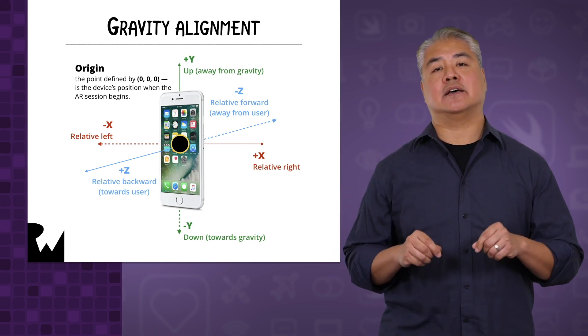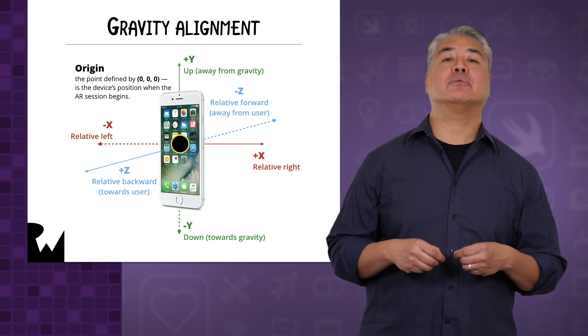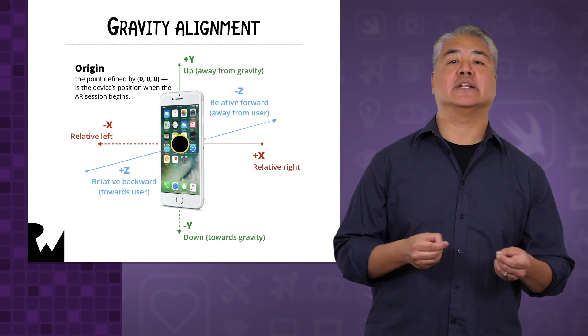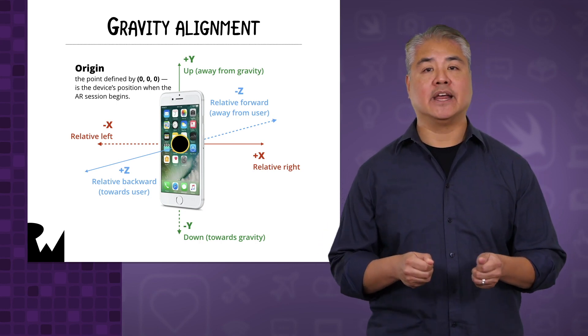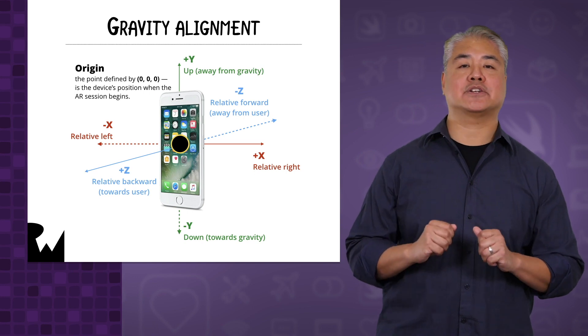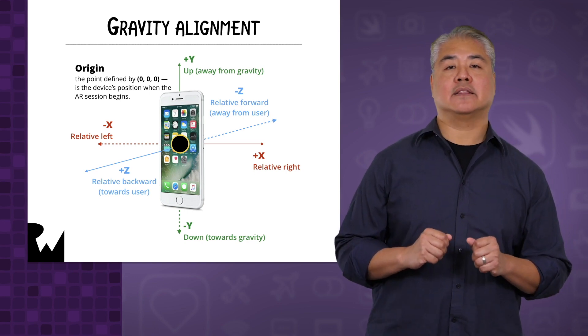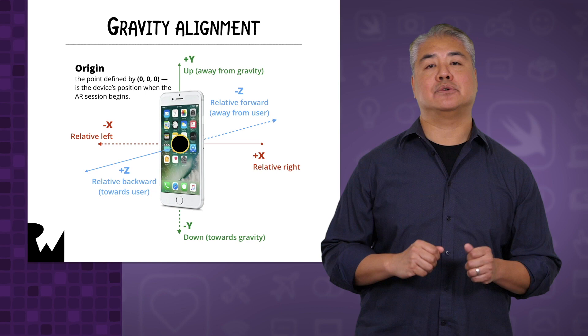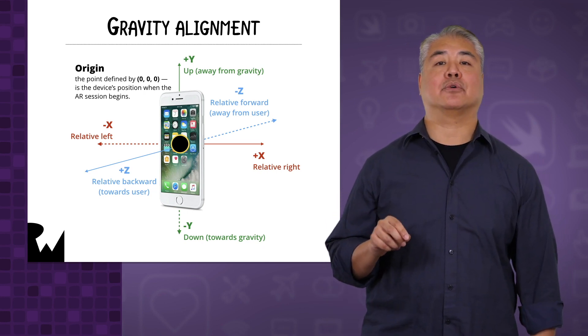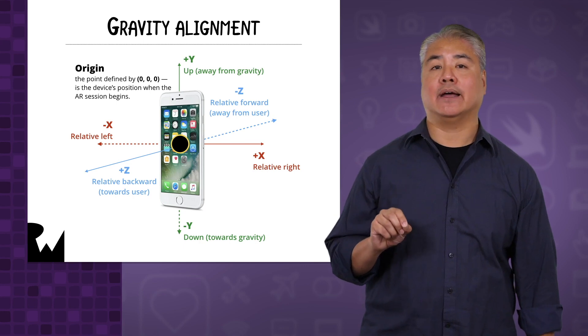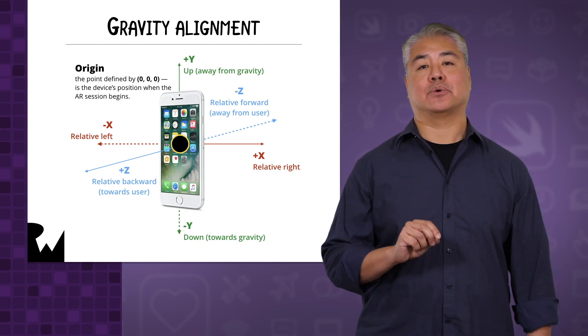You should use this alignment in AR apps where you only care about the position and orientation of the device relative to its position and orientation at the start of the AR session. This is the alignment that you'll use in the first two ARKit apps that you'll build. There's another alignment, one that takes both gravity and compass heading into account, and you'll use it later on in this course.